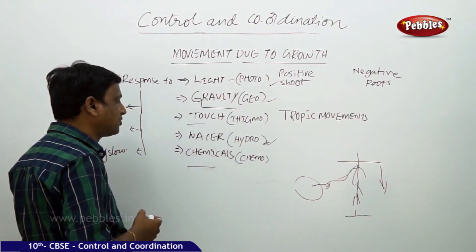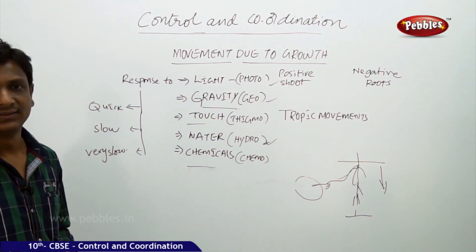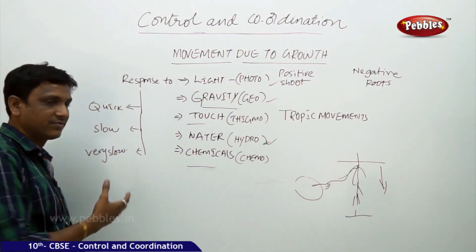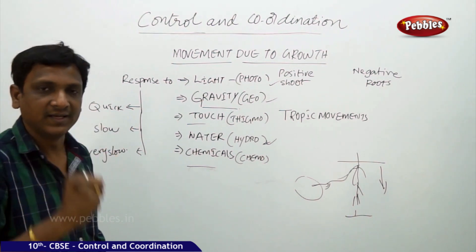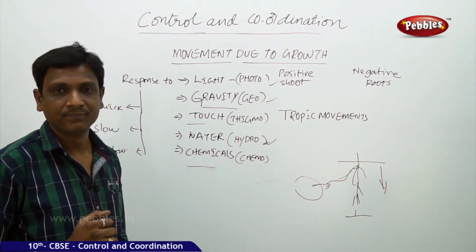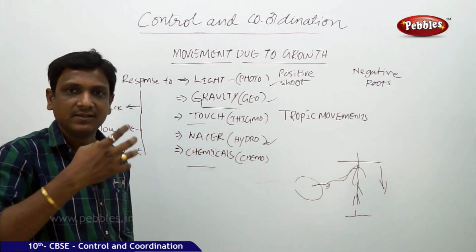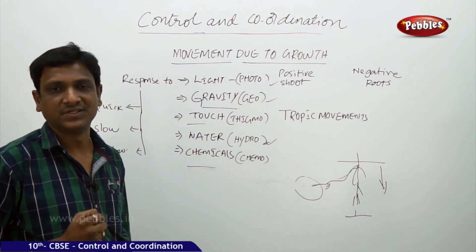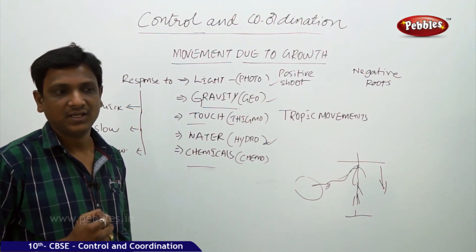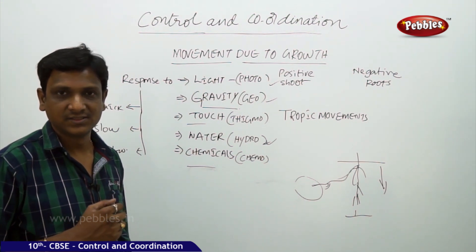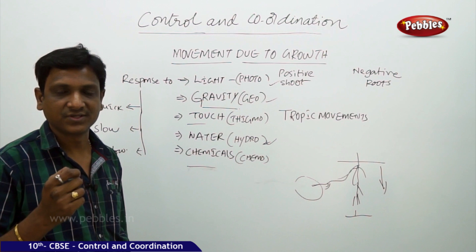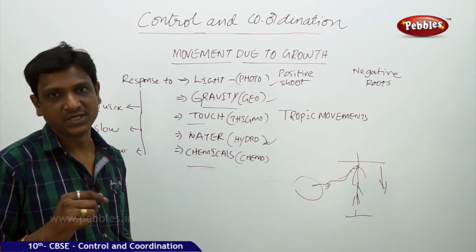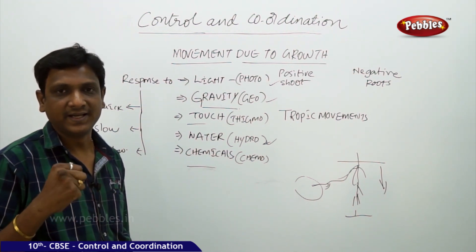The other two tropisms are thigmotropism — response to touch — and chemotropism — response to chemicals. In the case of touch, we see a quick response when we touch the mimosa plant: the leaves close up. Sometimes a plant moves towards an object to coil around it for support using tendrils. Creepers and climbers have soft, thread-like structures called tendrils. These tendrils grow towards an object, coil around it, and hold it to get support.